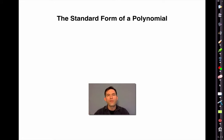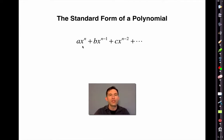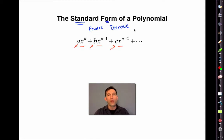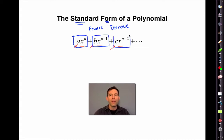The next thing we want to talk about is the standard form of a polynomial. It's important to be able to identify the coefficient on the highest term — that's called the leading coefficient — and to identify coefficients as the terms decrease in power. Standard form means rearranging a polynomial so the highest power comes first with its coefficient, then the next highest, et cetera. Some powers could be missing — that's okay — but the powers must decrease. That's a very important piece of terminology. A term is something separated by addition or subtraction.